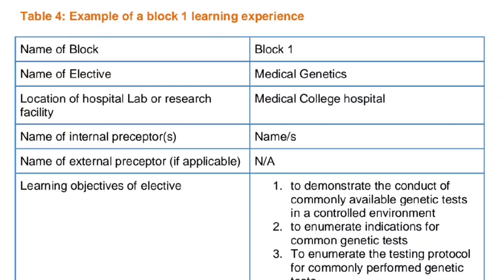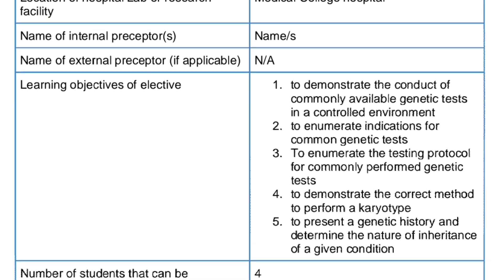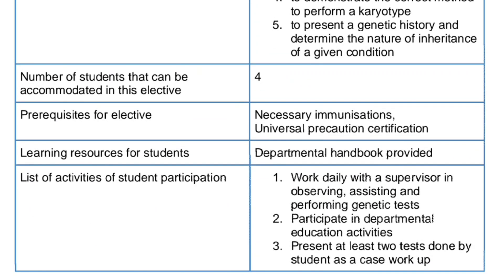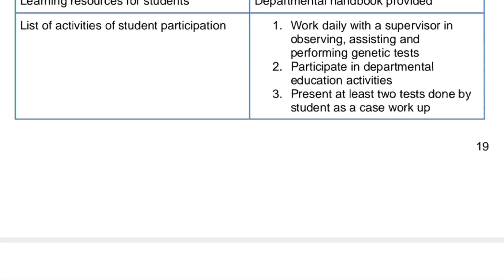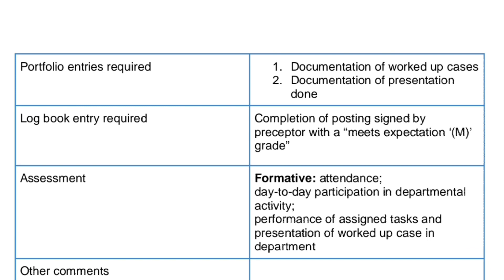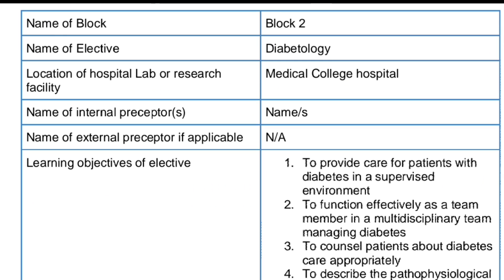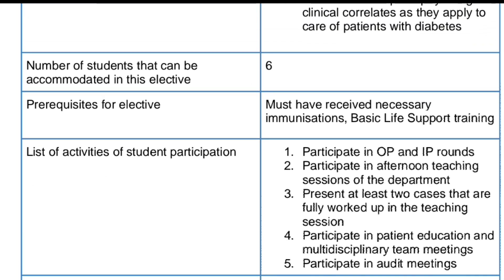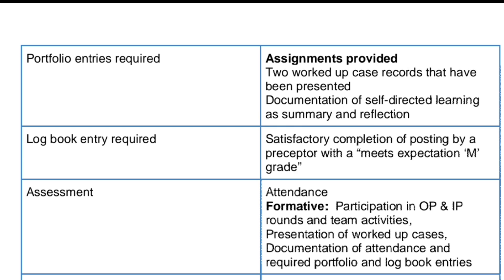Let us see an example module for Block 1. The module includes: name of the block, name of the elective, where you are going to do the elective, who is the internal preceptor and external preceptor (if present), the objectives, number of students accommodated, prerequisites, resources from the department, portfolio requirements, logbook maintenance details, and the mode of assessment. The Block 2 example is similar — same structure with name of the block, name of the elective, location, preceptors, objectives, prerequisites, list of activities participated in, learning resources used, portfolio, logbook, and mode of assessment.